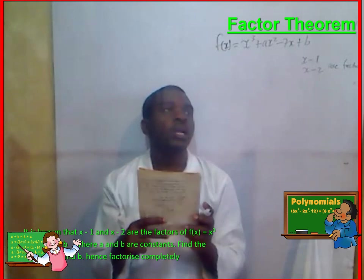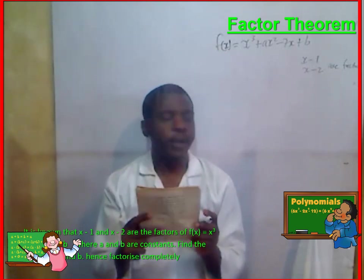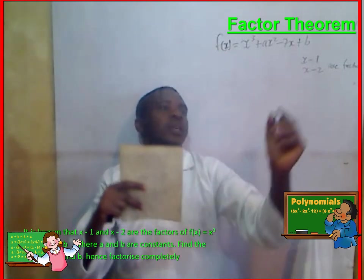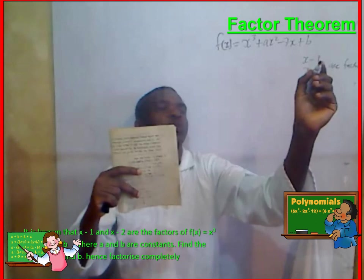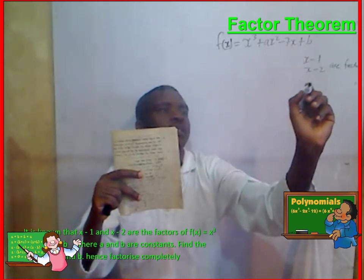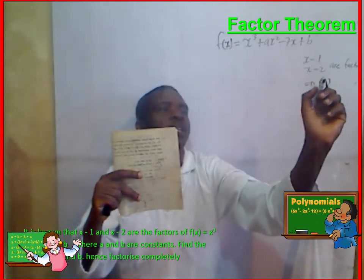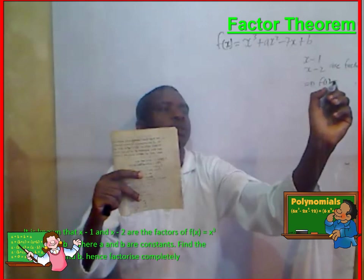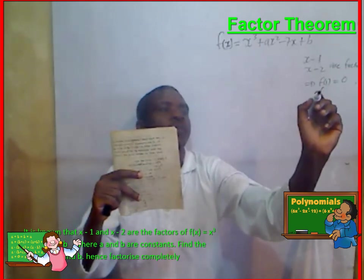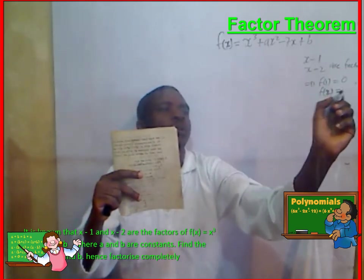So, going by our factor theorem, if x minus 1 is a factor, this implies that f of 1 should be equal to 0, and f of 2 should be equal to 0.